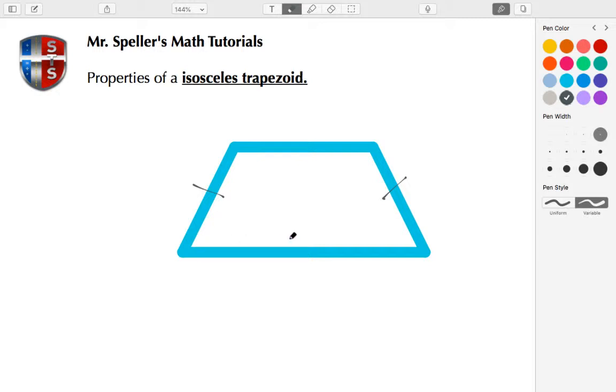Also, we know that the angles at the base here at the bottom are congruent, so this angle is congruent to this angle. Matter of fact, let's go ahead and label this trapezoid. We're going to call this A, B, C, D.